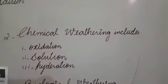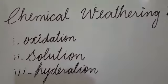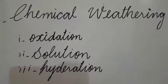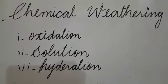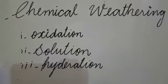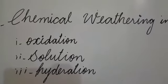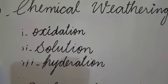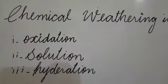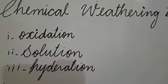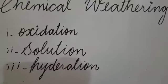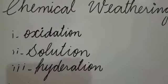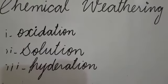Chemical weathering has three types: oxidation, solution, and hydration. Oxidation is the reaction between rock elements and oxygen — when rock elements and oxygen react with each other, it breaks down the rocks. The second type is solution, which is the reaction between acids and minerals. When we use different kinds of acids on minerals or rocks, it causes the breakdown of rocks into smaller parts through chemical solution.